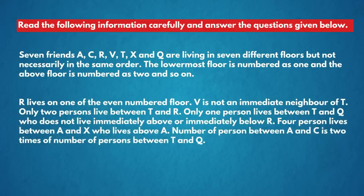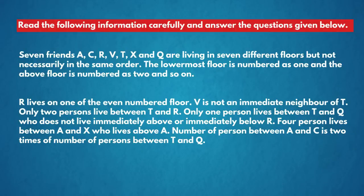Seven friends A, C, R, V, T, X and Q are living in seven different floors but not necessarily in the same order. The lowermost floor is numbered as 1 and the above floor is numbered as 2 and so on. Clues: R lives on one of the even numbered floors. V is not an immediate neighbor of T. Only two persons live between T and R. Only one person lives between T and Q, who does not live immediately above or immediately below R. Four persons live between A and X, who lives above A. The number of persons between A and C is two times the number of persons between T and Q.